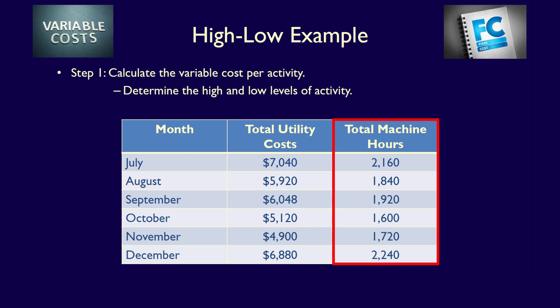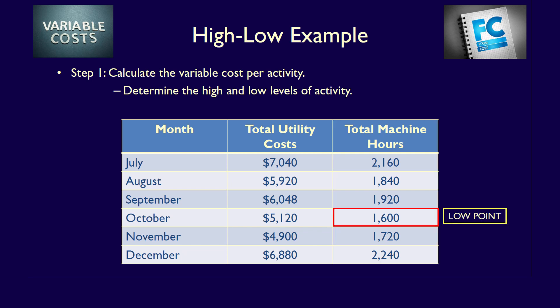For Phoenix, the activity is machine hours, because as machine hours change, total utility costs change, indicating that machine hours drive utility costs. Looking at the chart and focusing only on machine hour activity, the low machine hours is in October at 1,600 machine hours. We also note the related total utility costs for October: $5,120. We now have the low level and the related mixed costs.